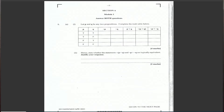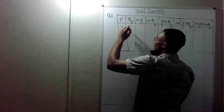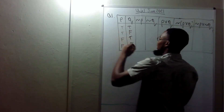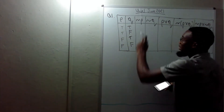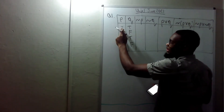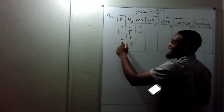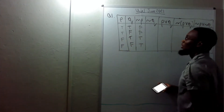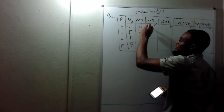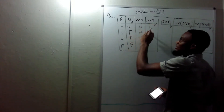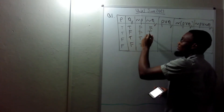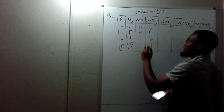We need to complete the table. They give us true, true, false, false for P and true, false, true, false for Q. To complete ¬P: negate true gives false, negate true gives false, negate false gives true, negate false gives true. For ¬Q: negate true gives false, negate false gives true, negate true gives false, negate false gives true.